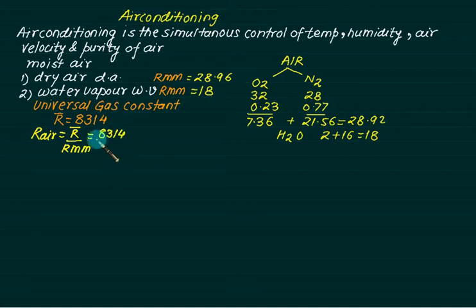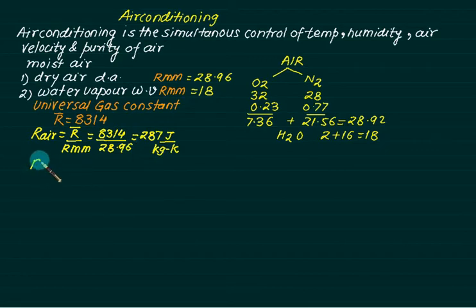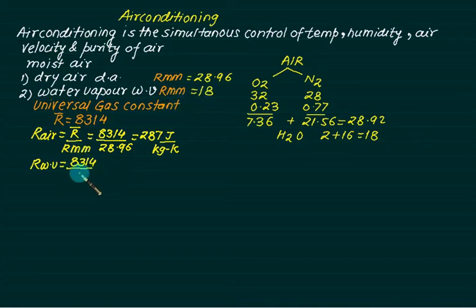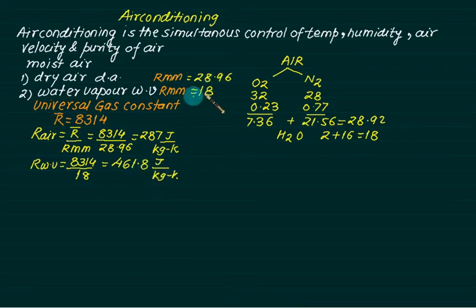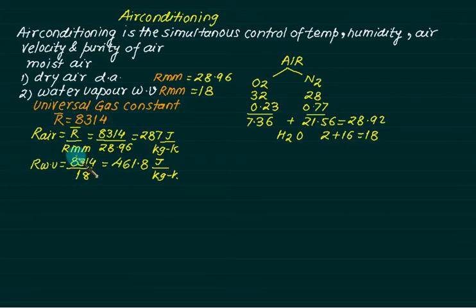For air: gas constant = 8314 / 28.96 ≈ 287 J/kg·K. Similarly, for water vapor: R = 8314 / 18 ≈ 461.8 J/kg·K. Remember R-bar = 8314; dividing by the relative molecular mass gives the specific gas constant for any substance.